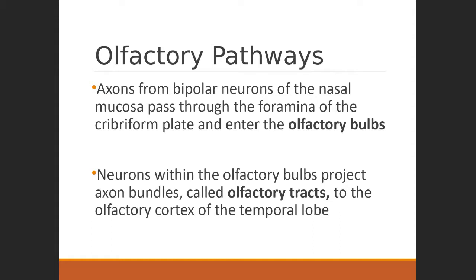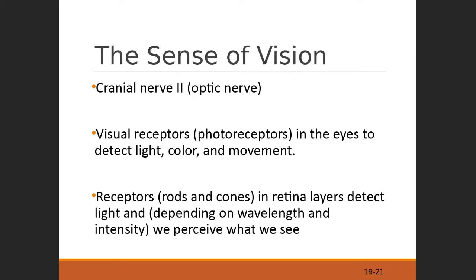Two sensations down — both examples of chemoreceptors, both rather simple in their design. Now we get to one of the more complex structures: the eye, the sense of vision, served by cranial nerve 2, the optic nerve. Here we have photoreceptors that together detect light intensity and, in some cases, perceive different wavelengths of light — which really means color. We divide our receptors into two main types: rods versus cones.